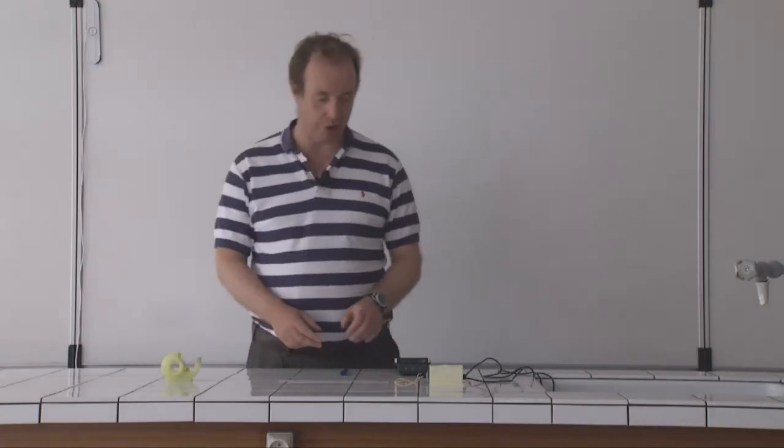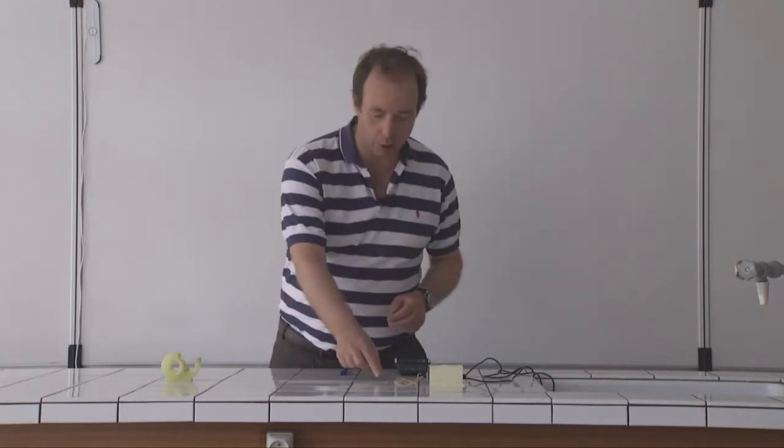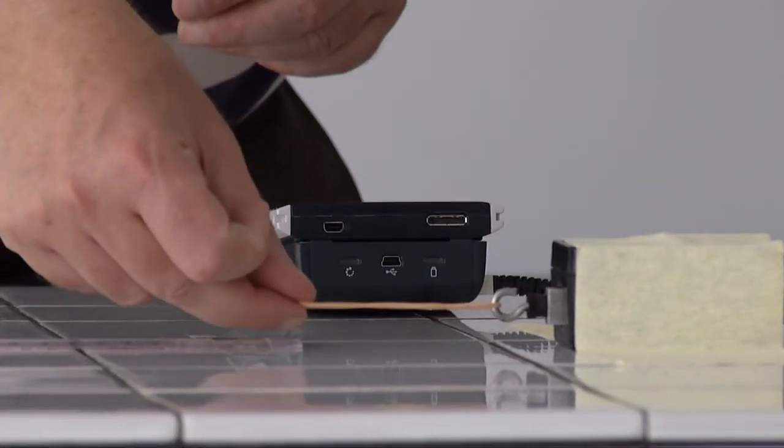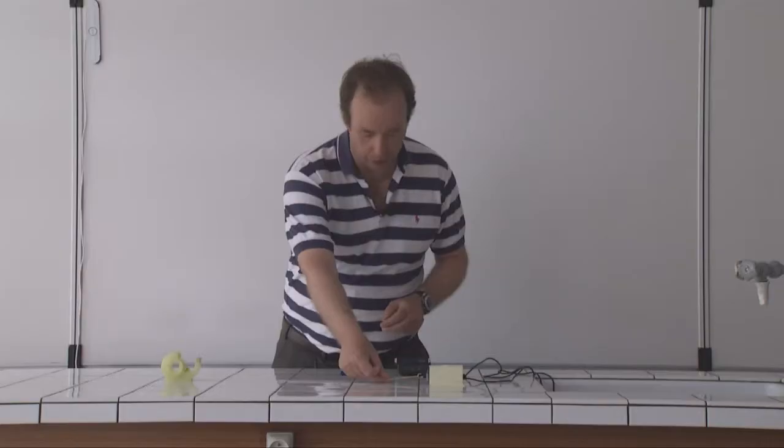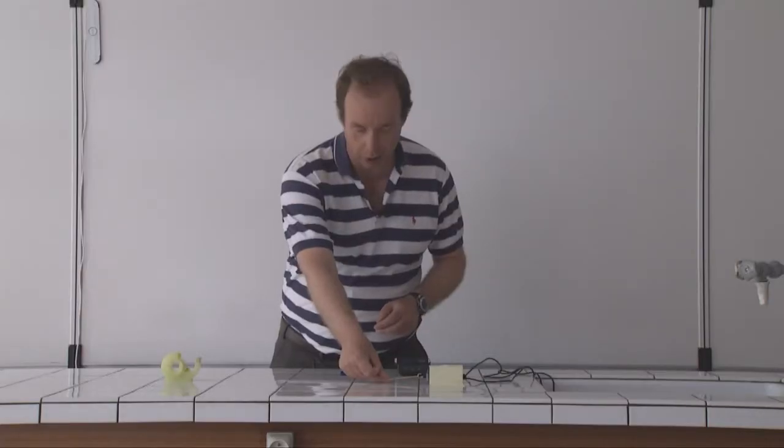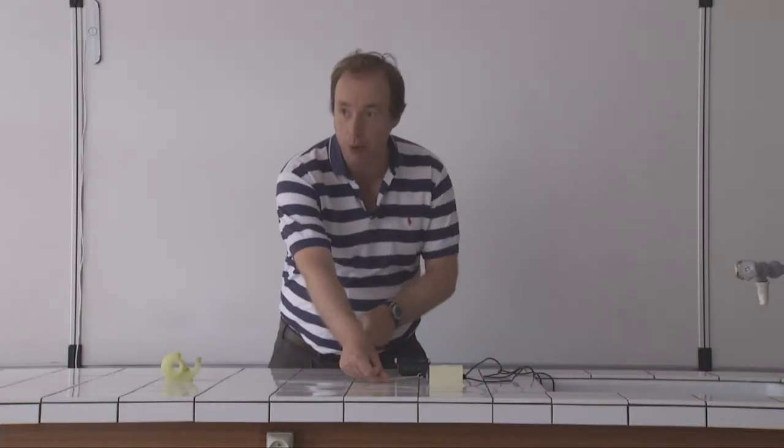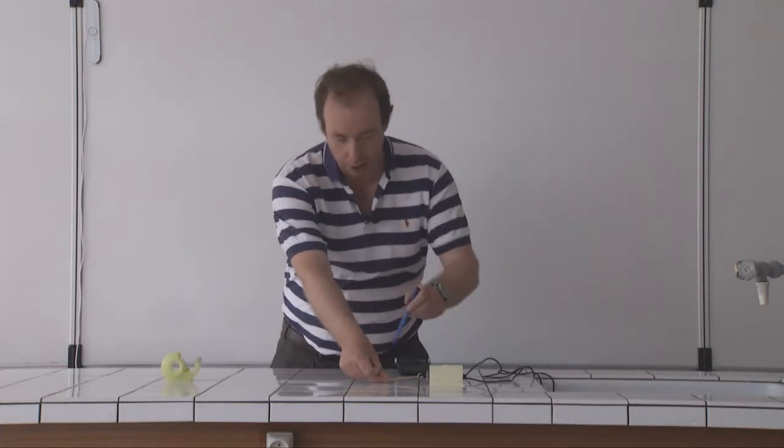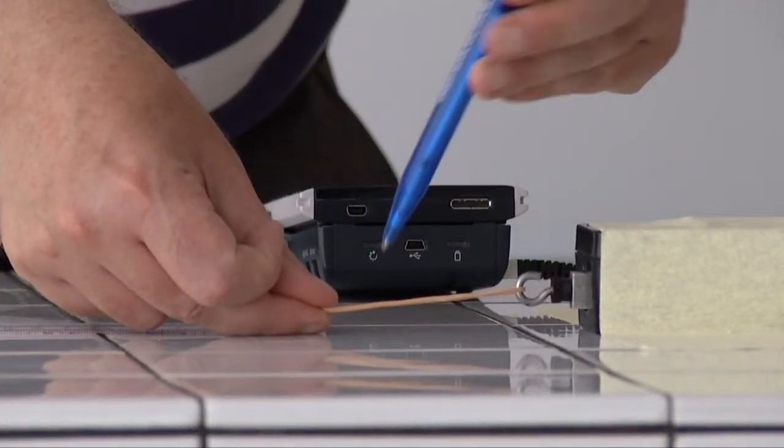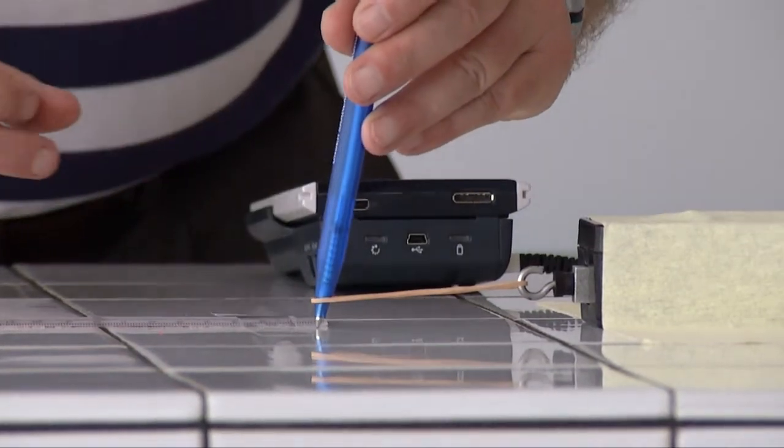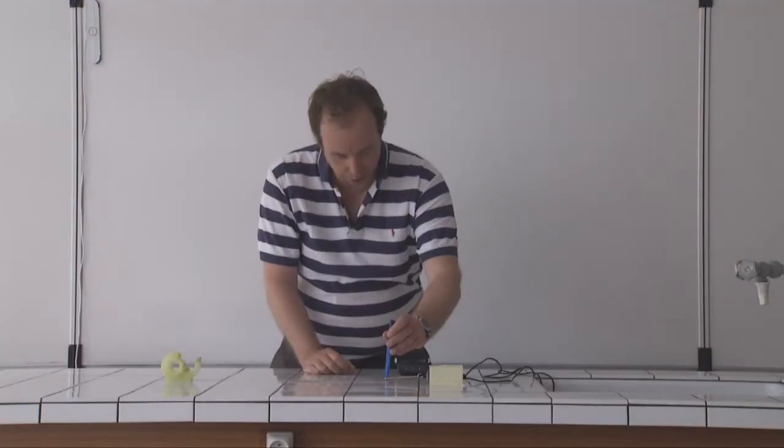Alright, so that's the force meter zeroed now. The ruler has been set up so that the rubber band basically gets up towards zero with just very little force at the start. So from then on, we're going to measure the extension of the rubber band. So we've put a pen in and we start off from zero. That should be near enough zero on the force meter.